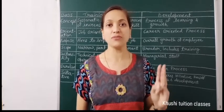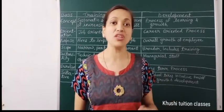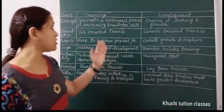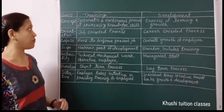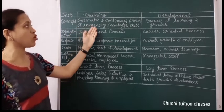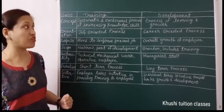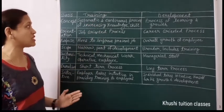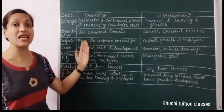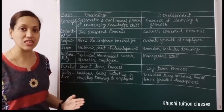There are three terms: training, development and education. Sometimes these terms are used interchangeably, but there are differences. The first point is systematic and continuous process of increasing knowledge and skill — on-the-job and off-the-job training — a systematic and continuous process in which a worker can improve knowledge, skill and efficiency.